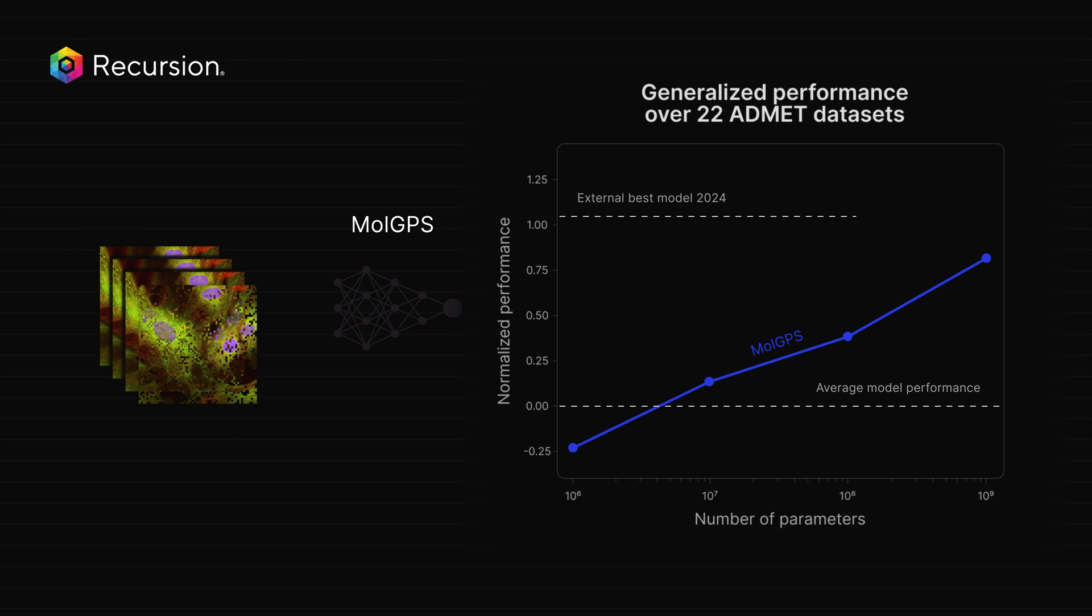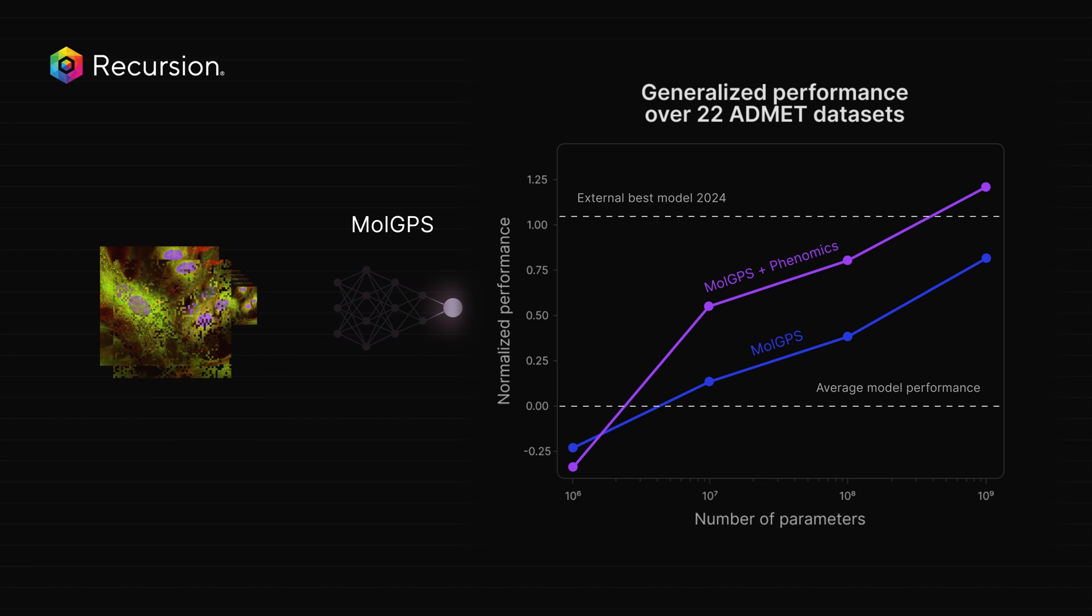When we introduced a small portion of proprietary phenomics data from Recursion into the training of MolGPS, this led to significant performance increases, similar to scaling the model by a factor of 50.